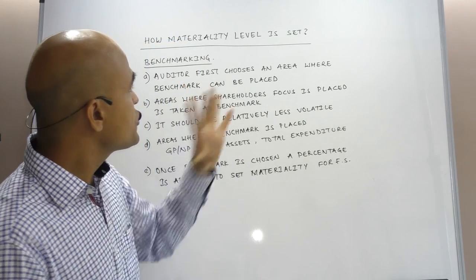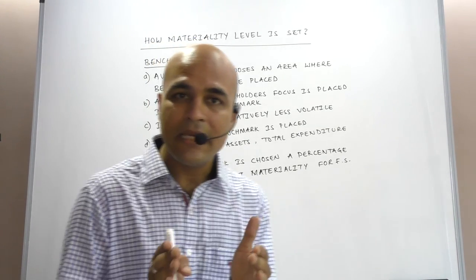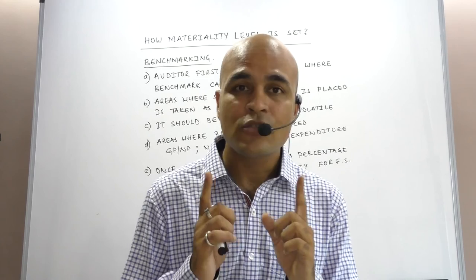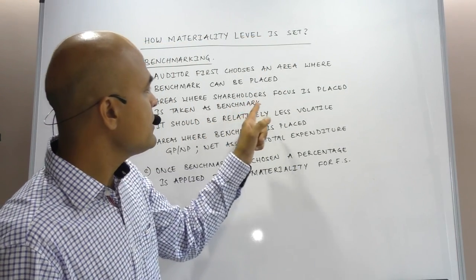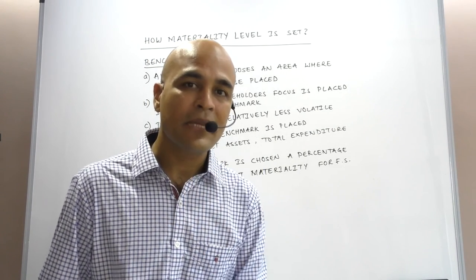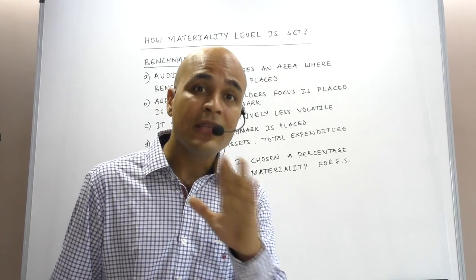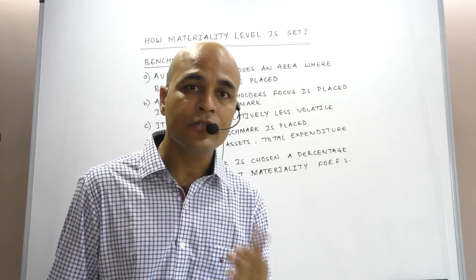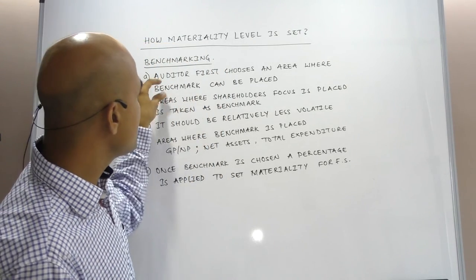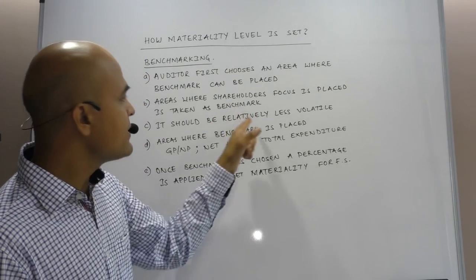The auditor first chooses an area where a benchmark can be placed. He has to choose an area from the financial statements which he wants to take as benchmark. The auditor has to ensure that the area chosen as benchmark is something where the shareholders' focus is placed. The benchmark taken should be relatively less volatile.